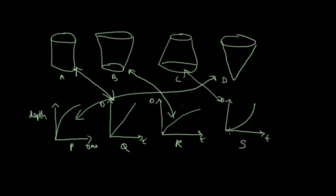So C goes slow at the beginning and then the rate increases because it's a wider base and a narrower top. These kinds of questions are quite common in the exam.